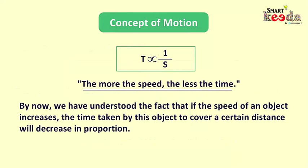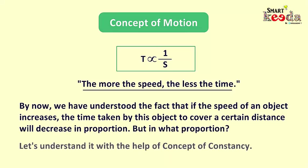By now we have understood the fact that if the speed of an object increases, the time taken by this object to cover a certain distance will decrease or vice versa. But the question arises: in what proportion? Let's understand it with the help of the concept of constancy. To understand the concept of constancy, let's take a scenario first.